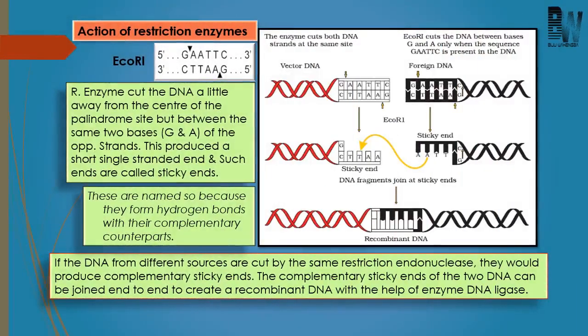Now coming to the action of restriction enzyme. We will see how EcoRI cuts the DNA. The recognition sequence for EcoRI is GAATTC, in which the two strands of DNA are arranged in palindrome. The enzyme EcoRI will cut the DNA in between two nitrogen bases — between G and A of its recognition sequence.